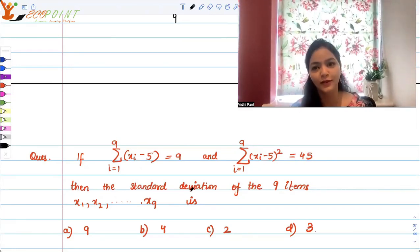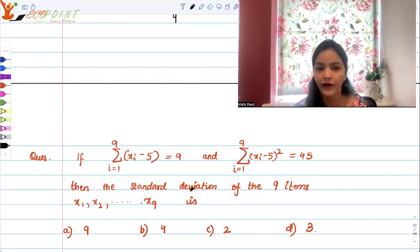Hey guys, welcome to another video and another question. Today's question is a statistics question. If summation (xi - 5), where i goes from 1 to 9, equals 9, and the sum of the squares (xi - 5)², again with i from 1 to 9, is 45...